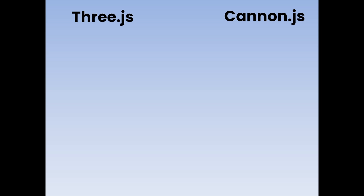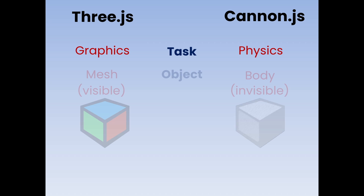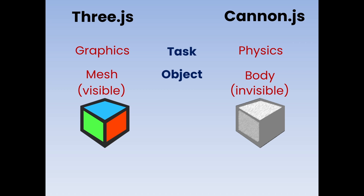Let's look at the differences between Three.js and Cannon.js and how we can get them to work together, and then we'll bring in the Cannon debugger. Cannon.js looks after the physics aspect of the world and Three.js looks after the graphics aspect. Cannon.js does not render anything — it doesn't show things on the screen. Three.js's job is to show where the Cannon.js objects are. These objects are called a 'body' in Cannon.js, and they are invisible. In Three.js we call them a 'mesh', and those are the visible objects.